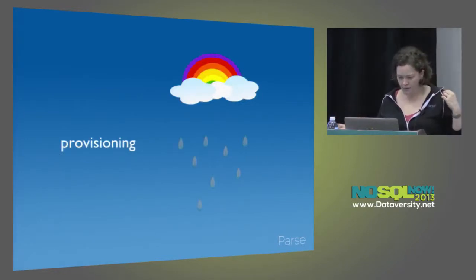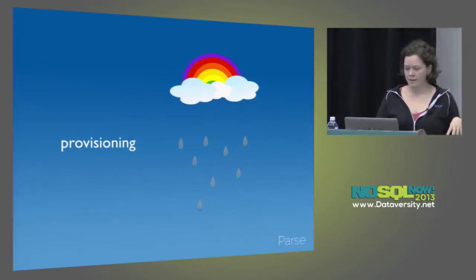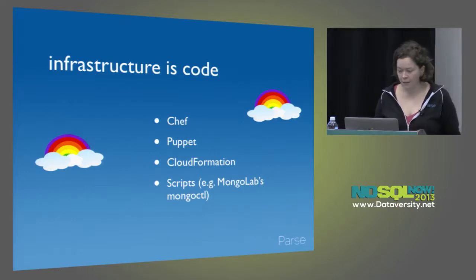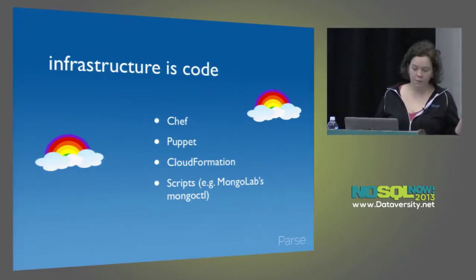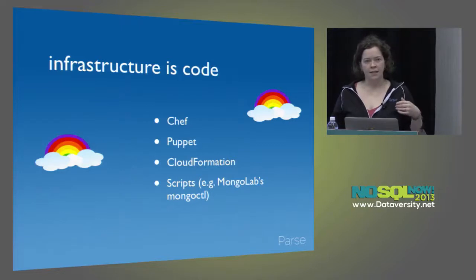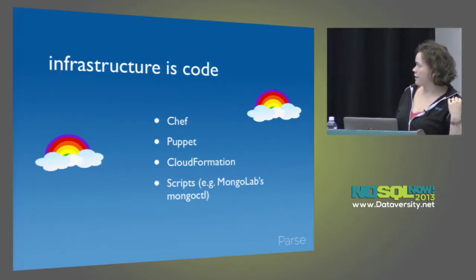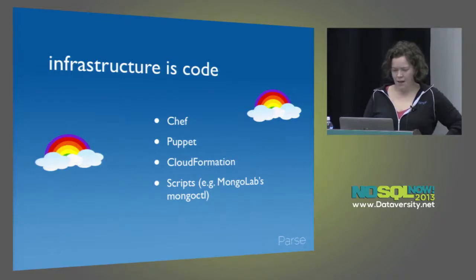Let's talk about how you're provisioning, not just what you're provisioning. Your infrastructure is code — you really don't want to do this by hand for any longer than you have to. There are a lot of tools available at varying levels of sophistication. I think the best one that's publicly available is the Chef Community Cookbook that we work on at Parse. I have some friends using Puppet to manage Mongo, but they've had to write a lot more stuff themselves. The Chef community is really good at community cookbooks where not everyone has to reinvent the wheel. I haven't used CloudFormation, but some people are using it. A lot of people also manage their Mongo deployments with homegrown scripts.